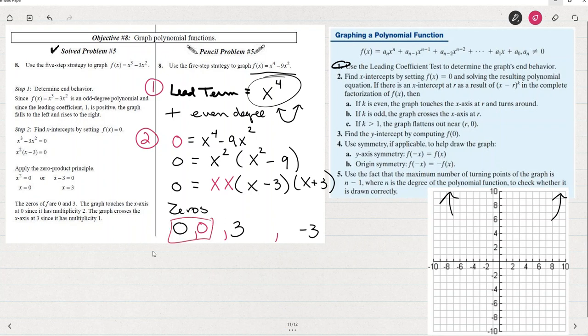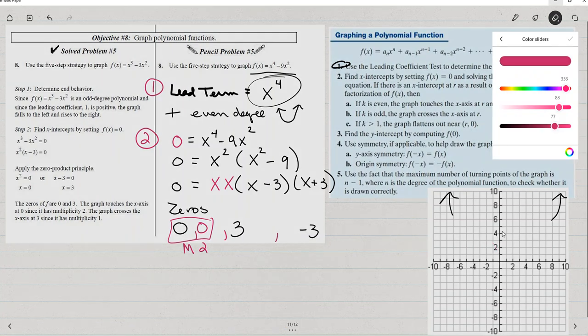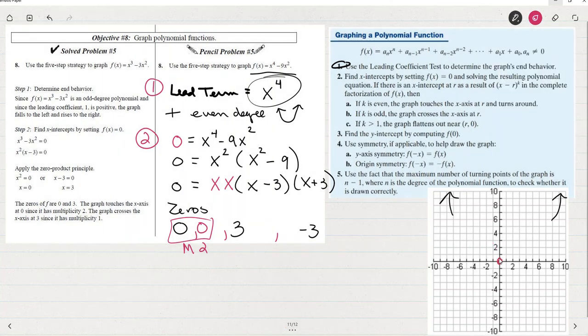So what that tells me is that we've got multiplicity two. So this zero twice, and that means that when I get to that zero, when I graph the zero, we're going to hit it and bounce back. It might be hitting and bouncing back like this, or it could be hitting and bouncing back like this, but it's not going to cross over at zero.